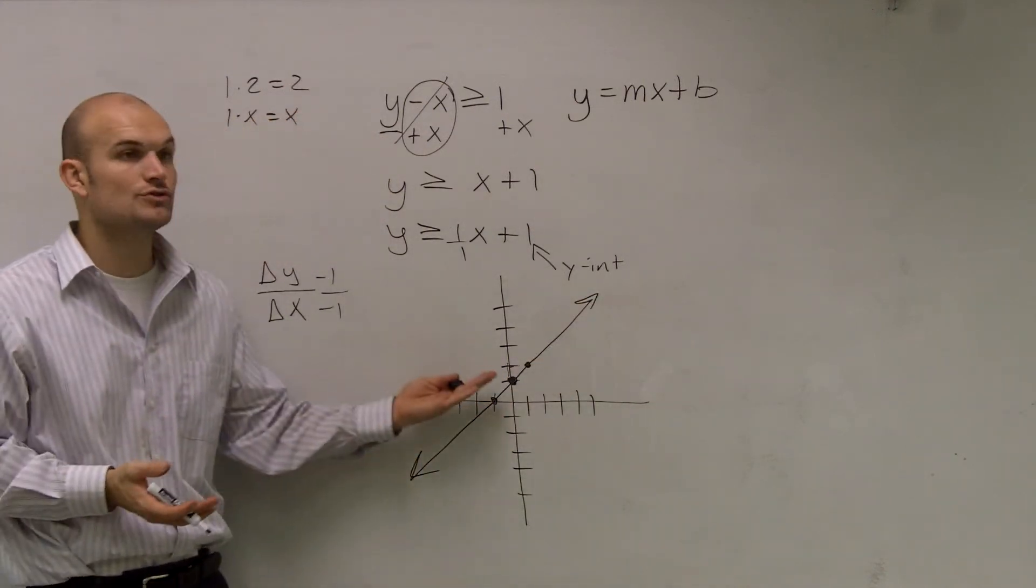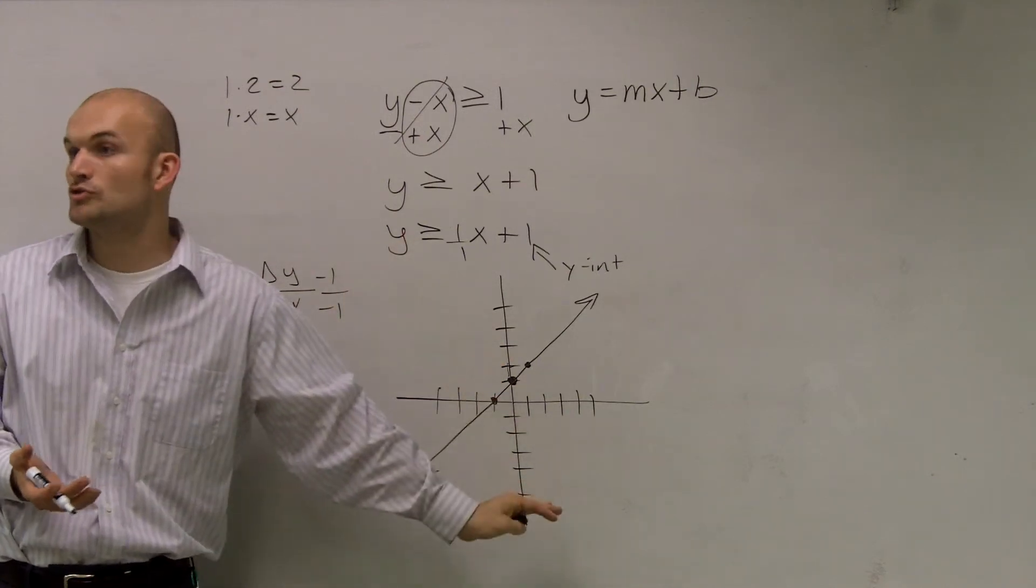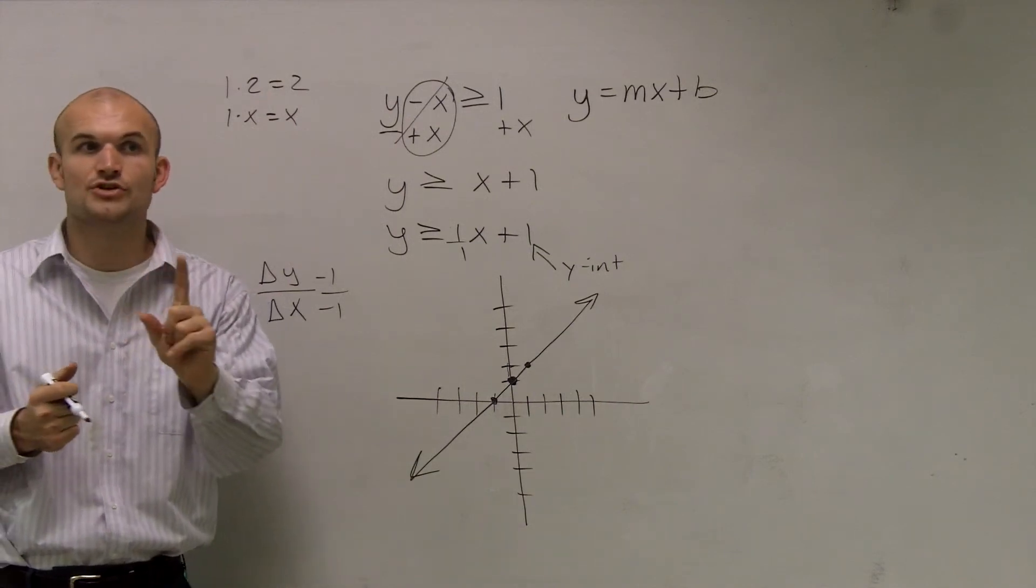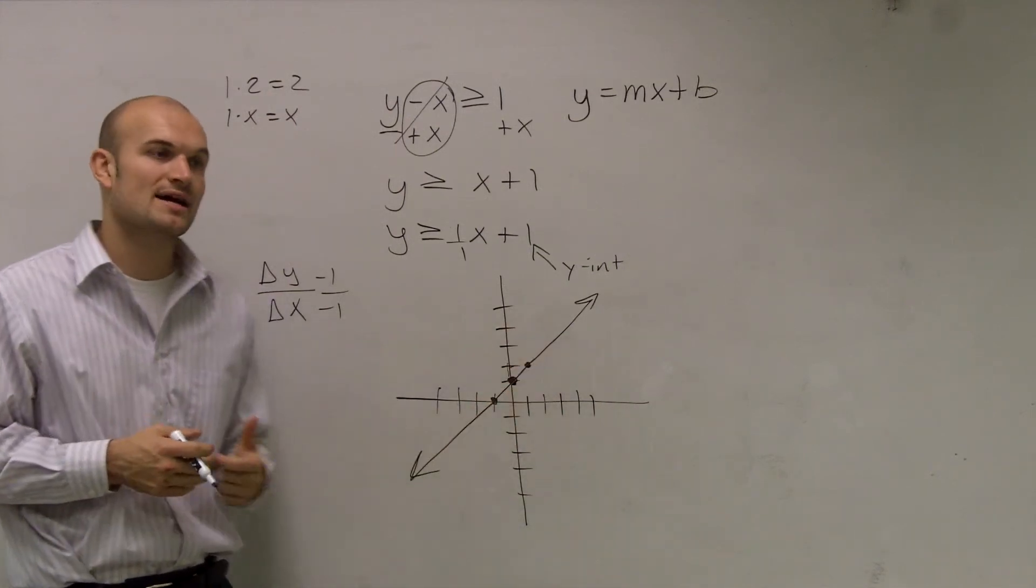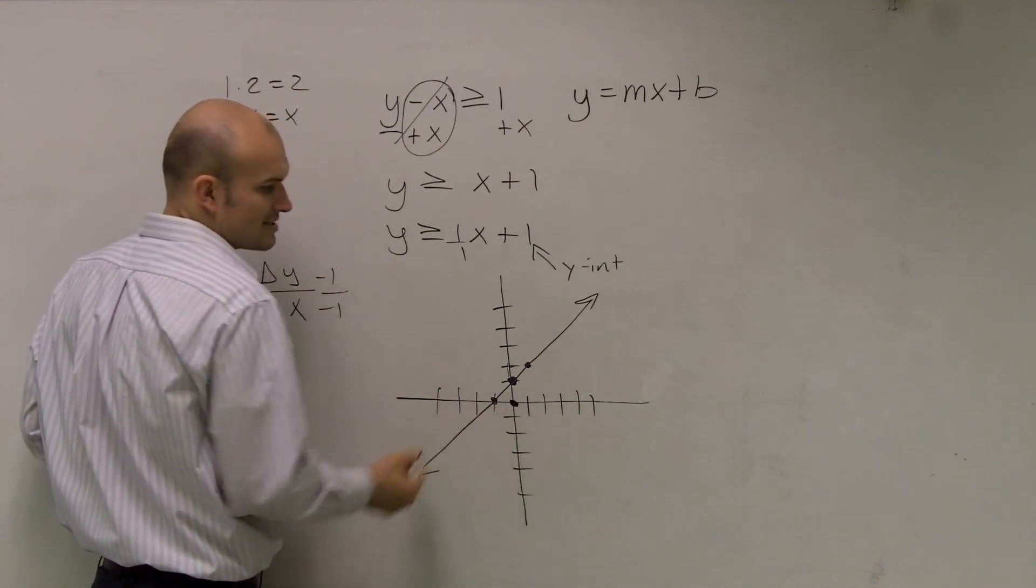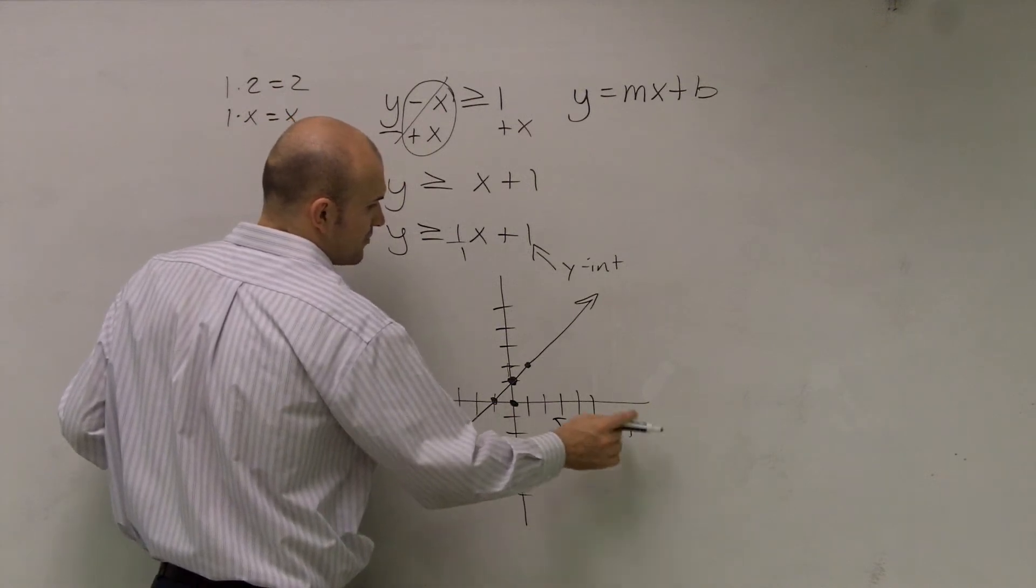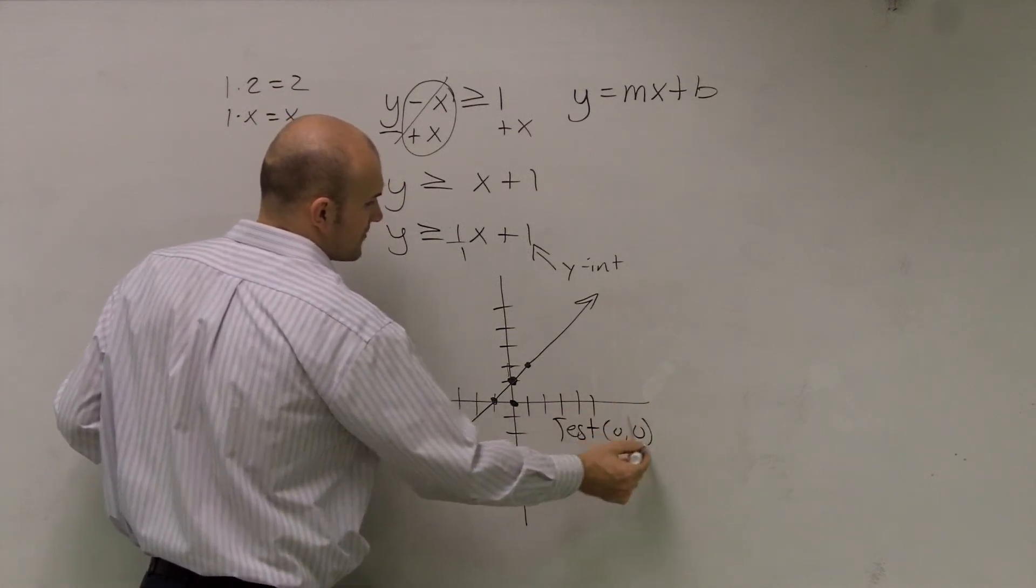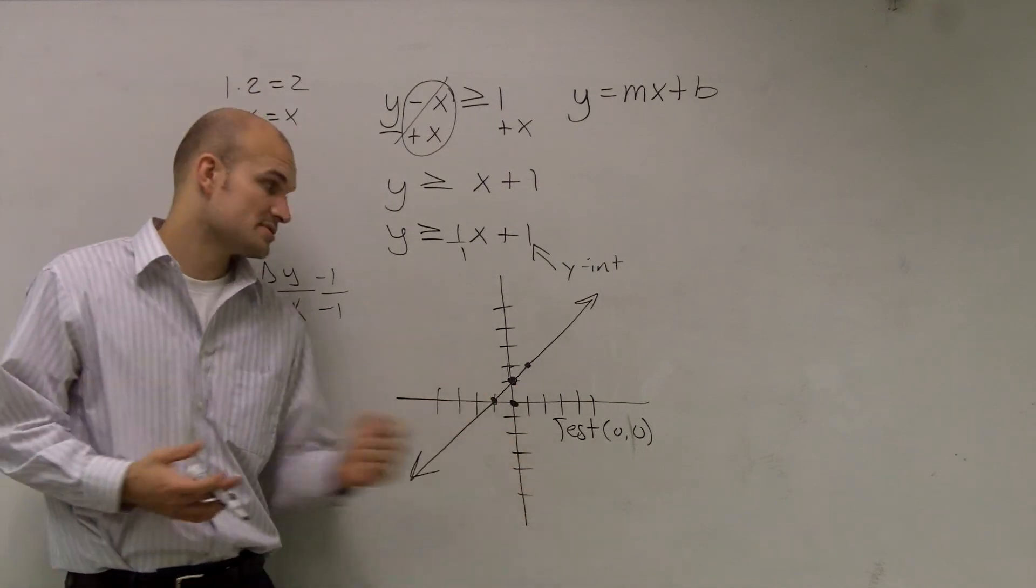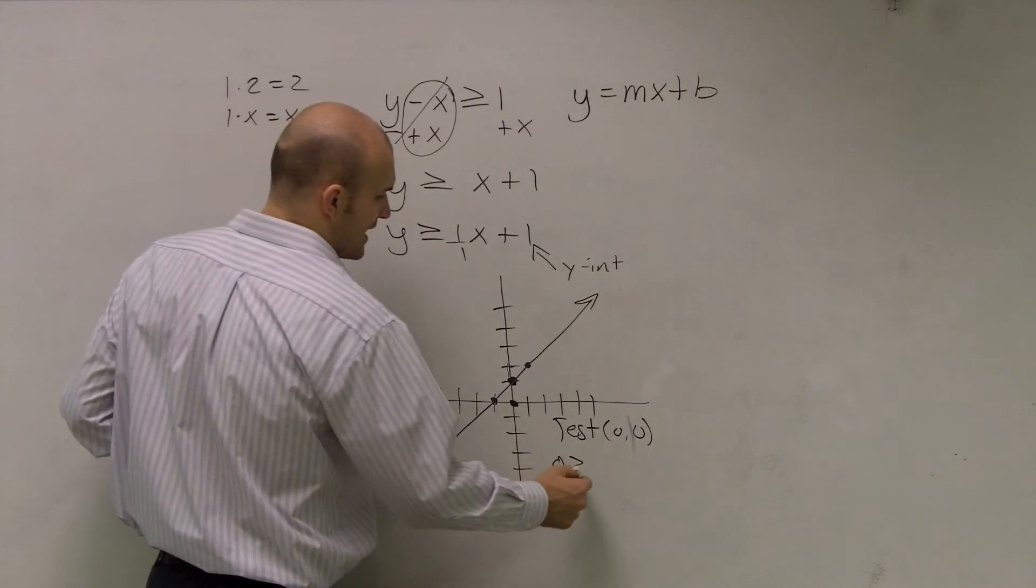Lastly, I need to determine, am I going to shade? So are all the points above true or all the points below true? And to determine which is true or not, you just need to find one point that's true, and then the rest of those points on that part of the line will be true or in relation. So we always like to pick test 0, 0. Because it's our easiest point for us to calculate. Now, the only time you don't want to use 0, 0, remember, is when the line goes through 0, 0.